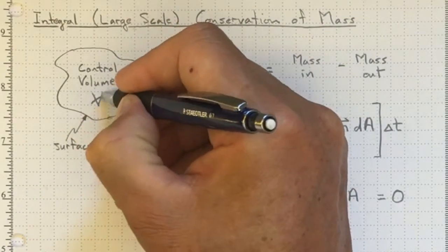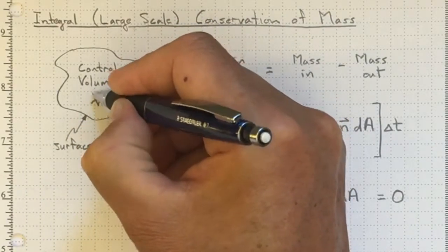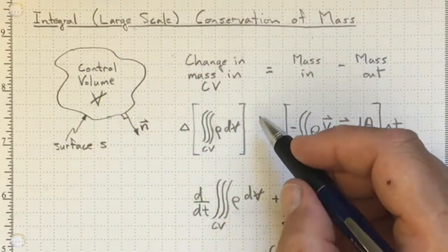So we've got our control volume. It's got this symbol, capital V, with a stroke through it to make sure we don't mistake it for velocity.